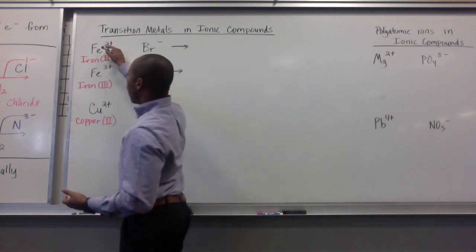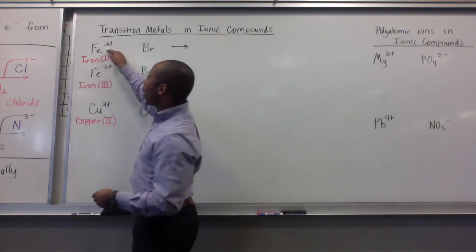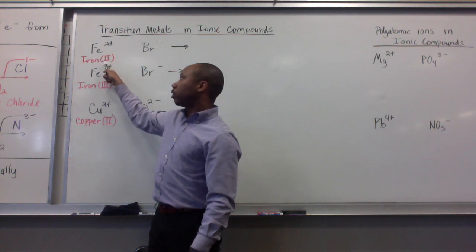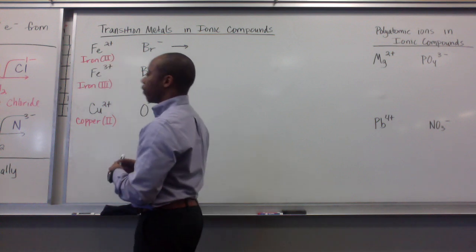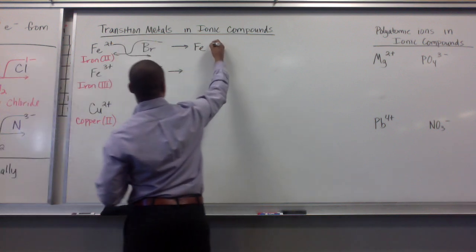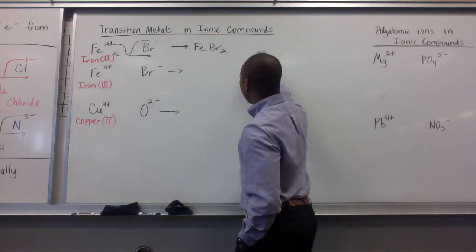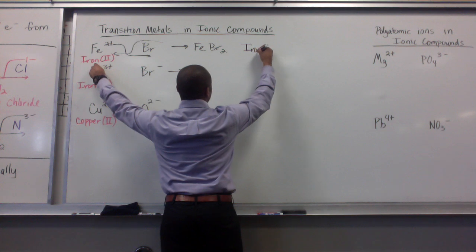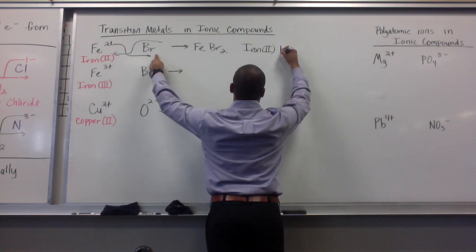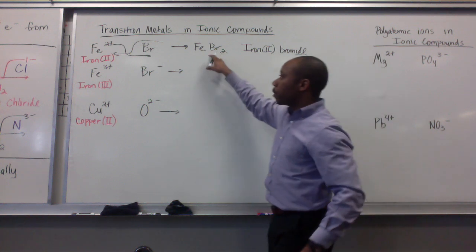Say we had bromine and iron bonding together. Iron can transition between different charges, so we have to denote what iron we have. We have iron with a two plus charge. To denote that, we write iron and in parentheses write the Roman numeral two. That means iron with a two plus charge. If I do my crossover method, two goes here, one goes there. My formula is Fe1Br2. That is iron(II) bromide.